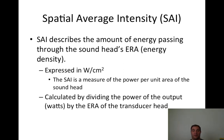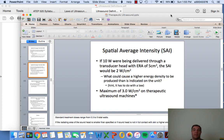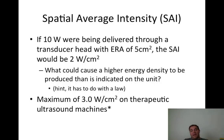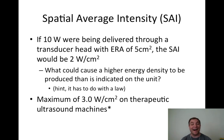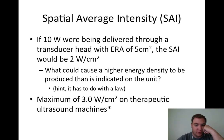SAI is calculated by dividing power output by the ERA of the transducer head. For example, if 10 watts were being delivered through a transducer with an ERA of 5 centimeters squared, the SAI would be 2 watts per centimeter squared. Standard treatment doses range from 0.3 to 5 total watts.